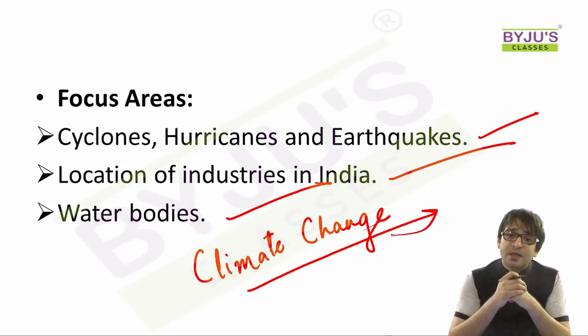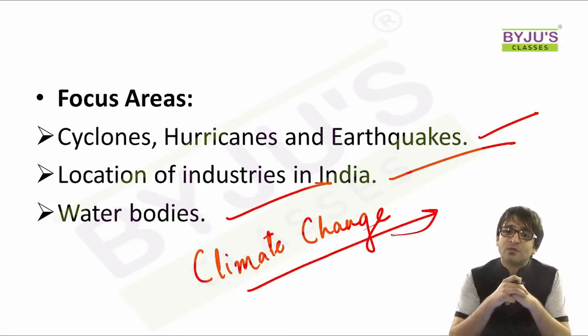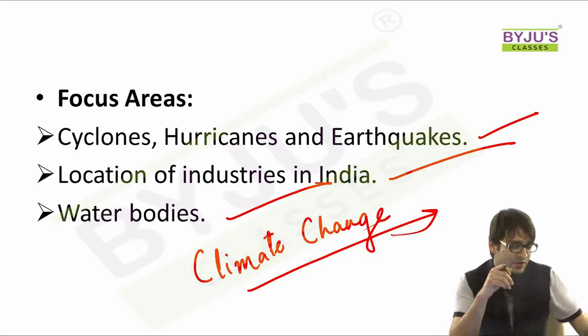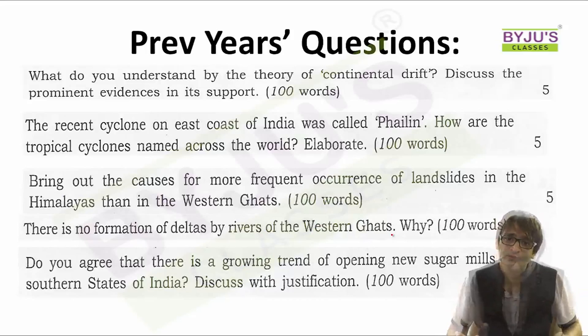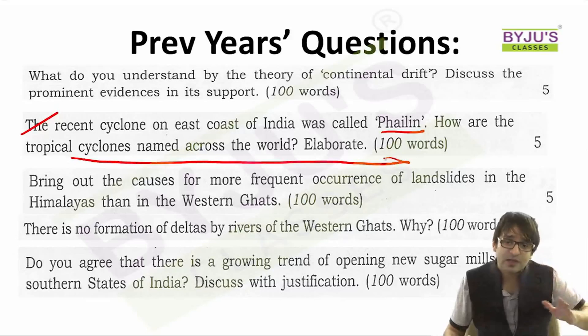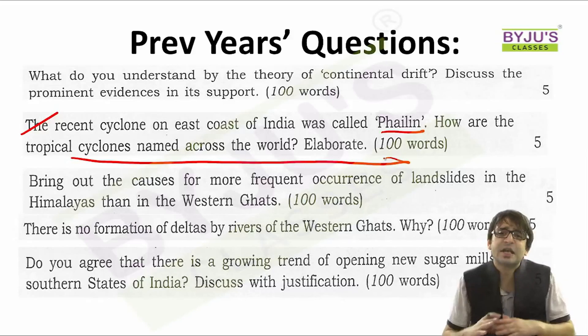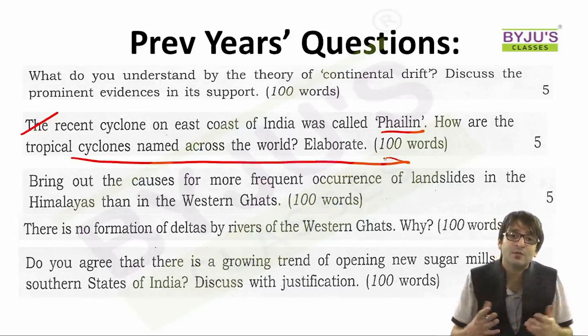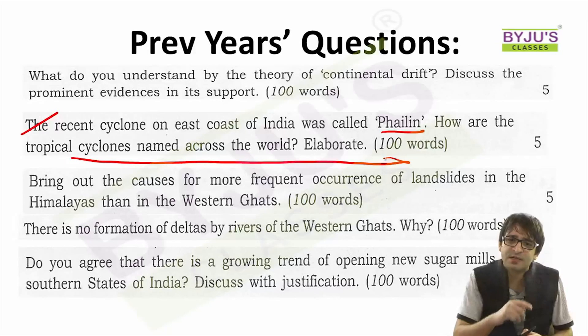Why climate change? Because in a very recent speech at the United Nations, Prime Minister Narendra Modi talked about terrorism and climate change as two important threats to the world. If we look at the questions asked over the past few years, we see a close linkage between current affairs and the geography syllabus. For example, a question was asked: 'The recent cyclone on the east coast of India was called Phailin — how are tropical cyclones named across the world?' So in the year this question was asked, we saw cyclones named Hudhud, Phailin, and Nilofar, and the question was: how are these cyclones named?